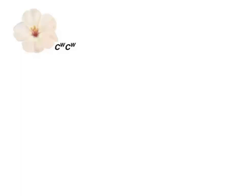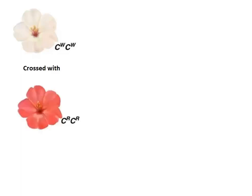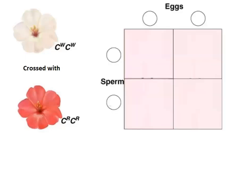Let's start this cross with the white flower. The white four o'clock flower has a genotype of CW CW. We're going to cross that with a red flower, and the genotype for the red flower is CR CR. You're going to see what happens when these are combined.